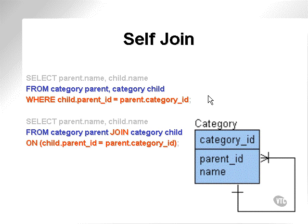The self-join is a join that joins a table to itself. The self-join is also sometimes called a grouping join, a hierarchical join, or a fishhook join.